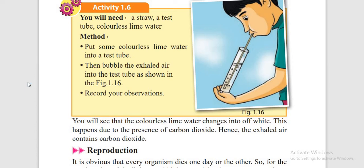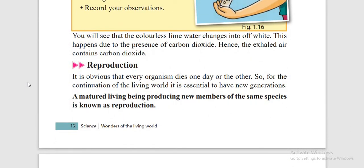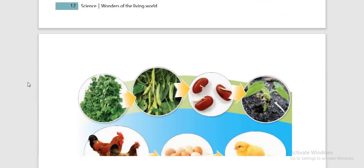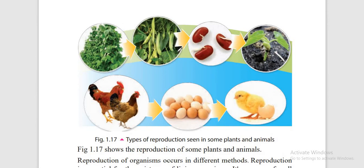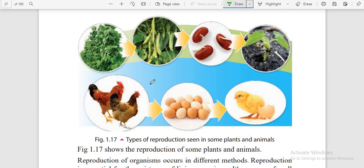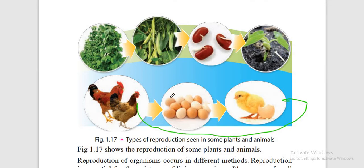The next characteristic of living organisms is reproduction. Reproduction means the matured living being producing new members of the same species. Here you see the bean plant produce bean fruits, and the seeds of the beans can grow and produce a new bean plant. Also, a hen lays an egg, the egg becomes a chick, and the chick becomes another hen that lays eggs. This is called reproduction.